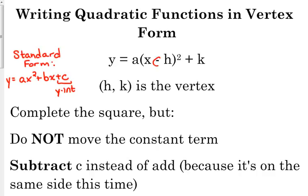Notice, h has a minus in front of it, so you're going to change the sign when you're identifying the vertex. So if it's x + 2 squared,